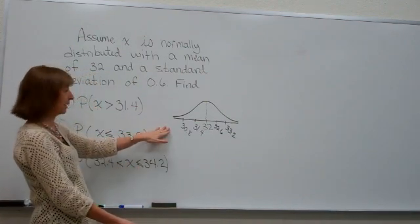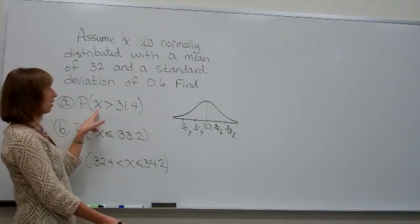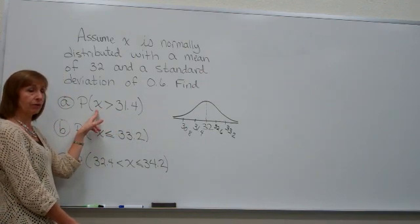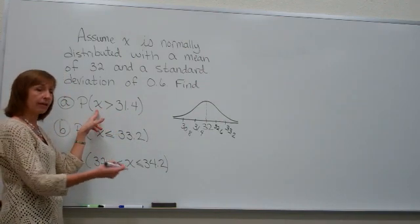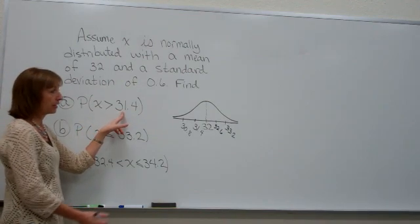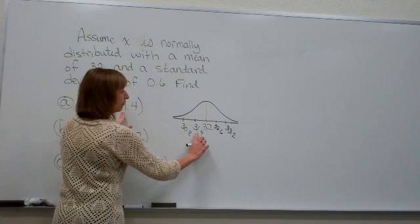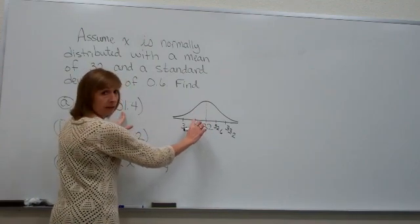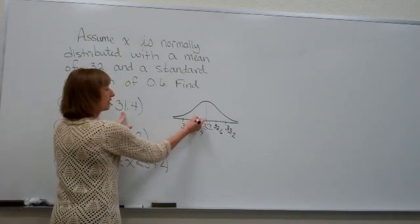So that kind of gives me an estimate. Now, we're looking at the probability that if I picked a value at random, I would get a value whose number is greater than 31.4. So 31.4 is actually one of these that I marked. So I think, okay, that's my cutoff.